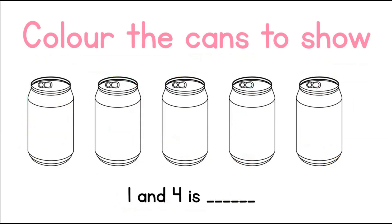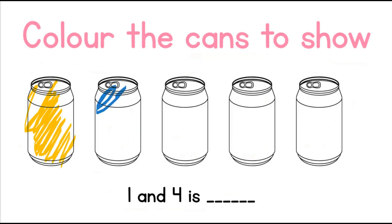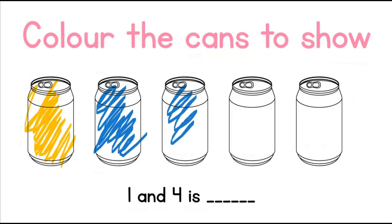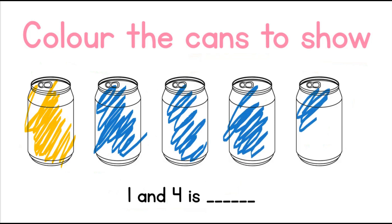Colour the cans to show that 1 and 4 is 5. 1 yellow can and 4 blue cans gives us the number 5. We have 5 cans.